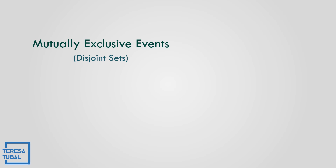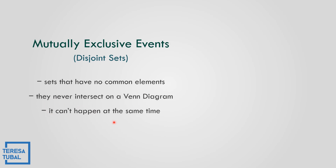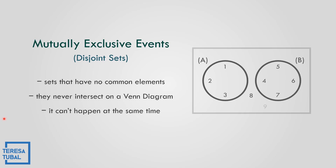What are mutually exclusive events? Mutually exclusive events are sets that have no common elements. They never intersect on a Venn diagram and cannot happen at the same time — they are disjoint sets. As you can see in the Venn diagram, event A and event B never intersect, so this is the mutually exclusive event.